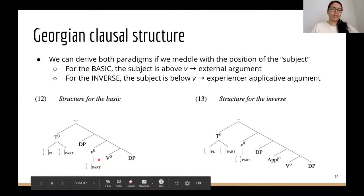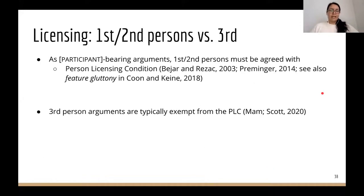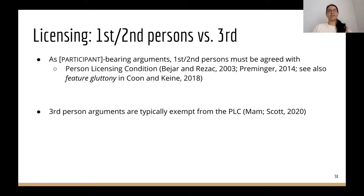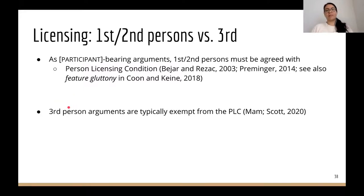I'm going to adopt something like the person licensing condition, where first and second persons must be agreed with if there is a licensing problem in the clause. We can capture the shared requirement from first and second persons by assuming they both bear an abstract participant feature. In Georgian, third persons are exempt from the person licensing condition—typical cross-linguistically, though with some exceptions. We can see these licensing effects independently in the Georgian PCC: the Georgian strong PCC bars a first or second person direct object in the presence of an indirect object.